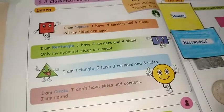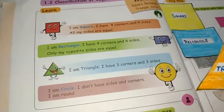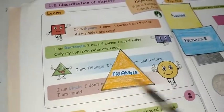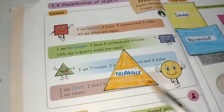I am triangle. I have three corners and three sides. Yes, triangle have three sides and three corners.